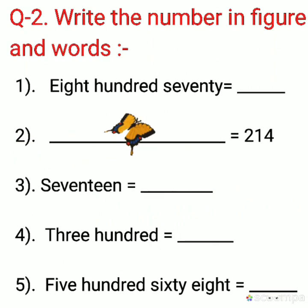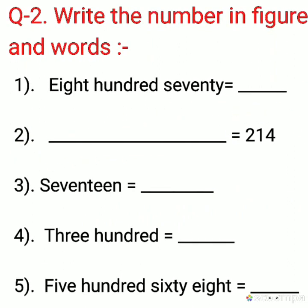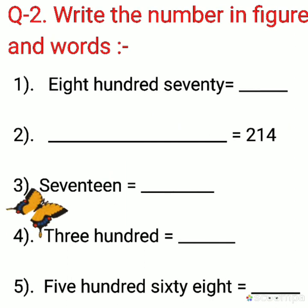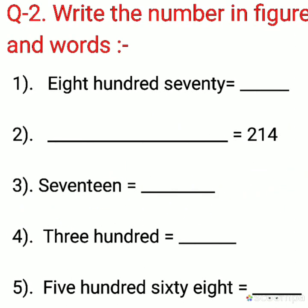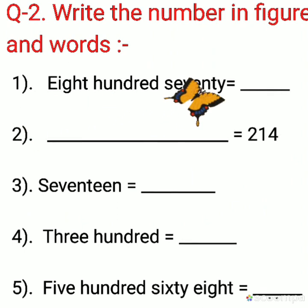For example, first one. 870. How will you write it in numeral form? 8, 7, 0. Understood? Like this, do other questions also.